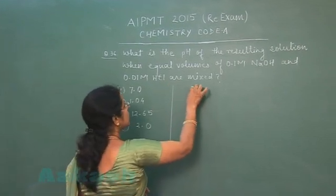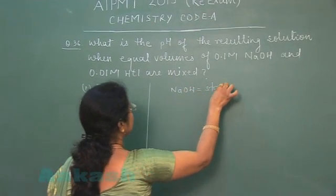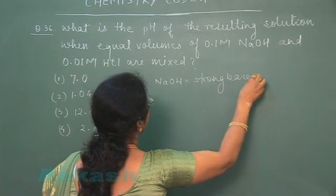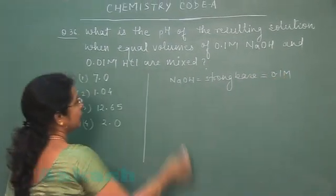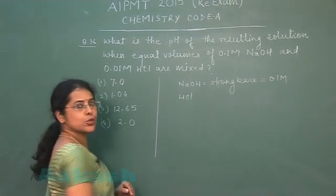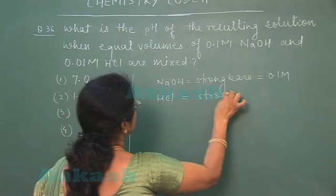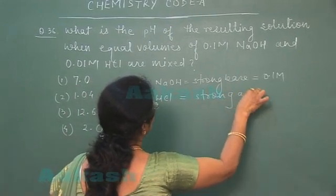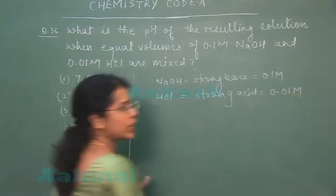NaOH is a strong base and quantity taken is 0.1 mole. HCl is a strong monoprotic acid and its quantity taken is 0.01 mole.